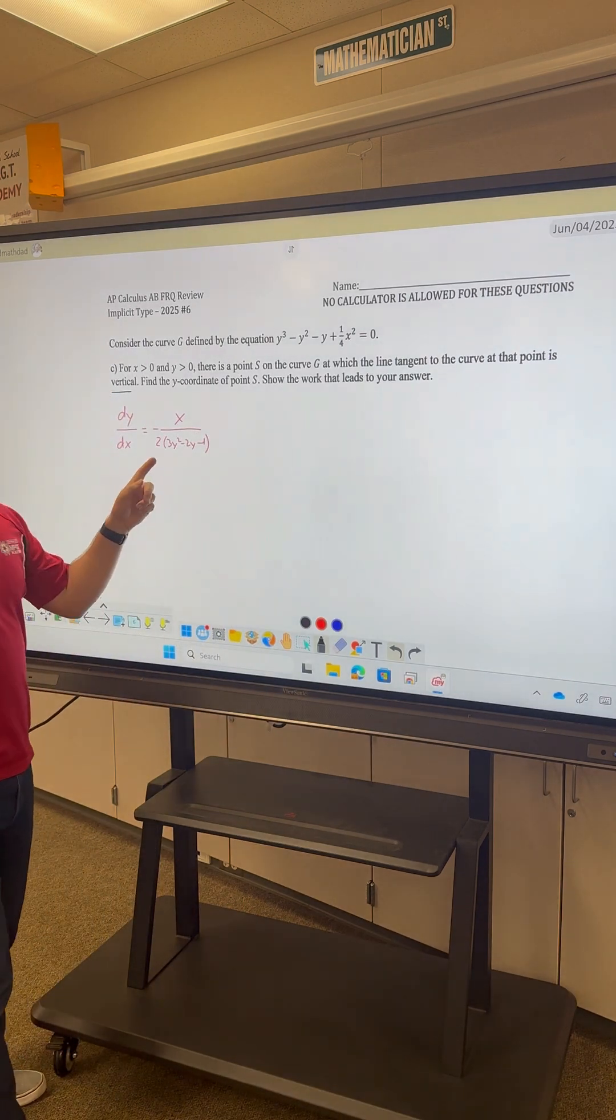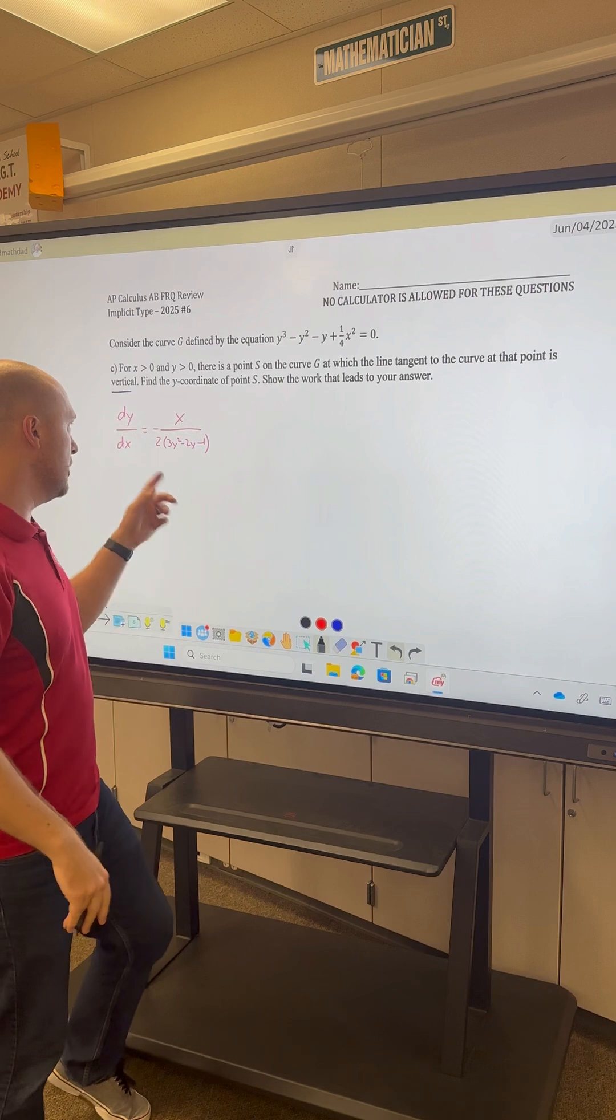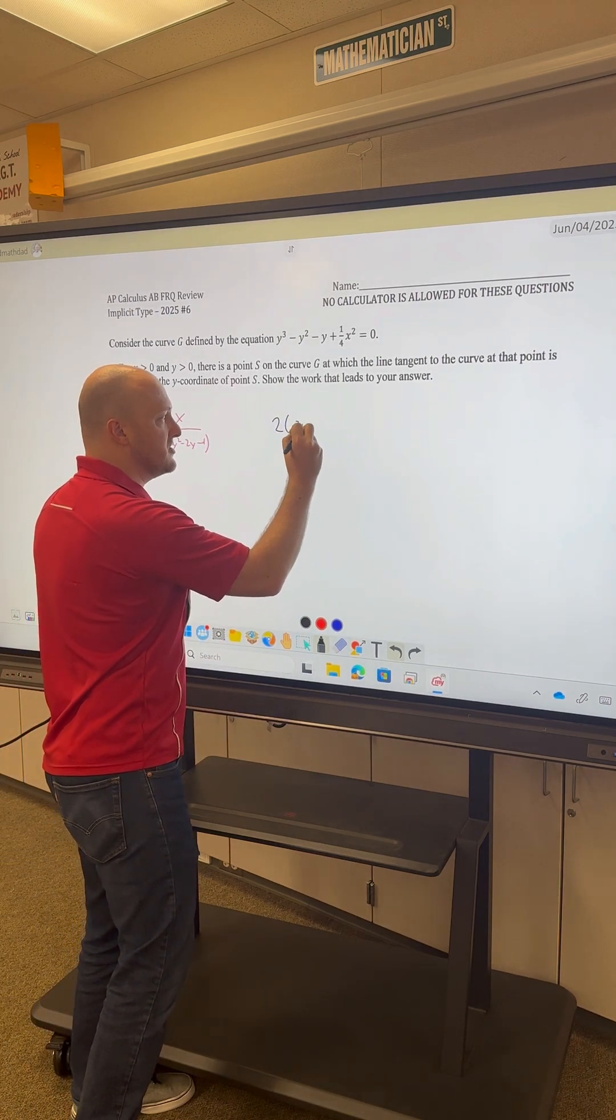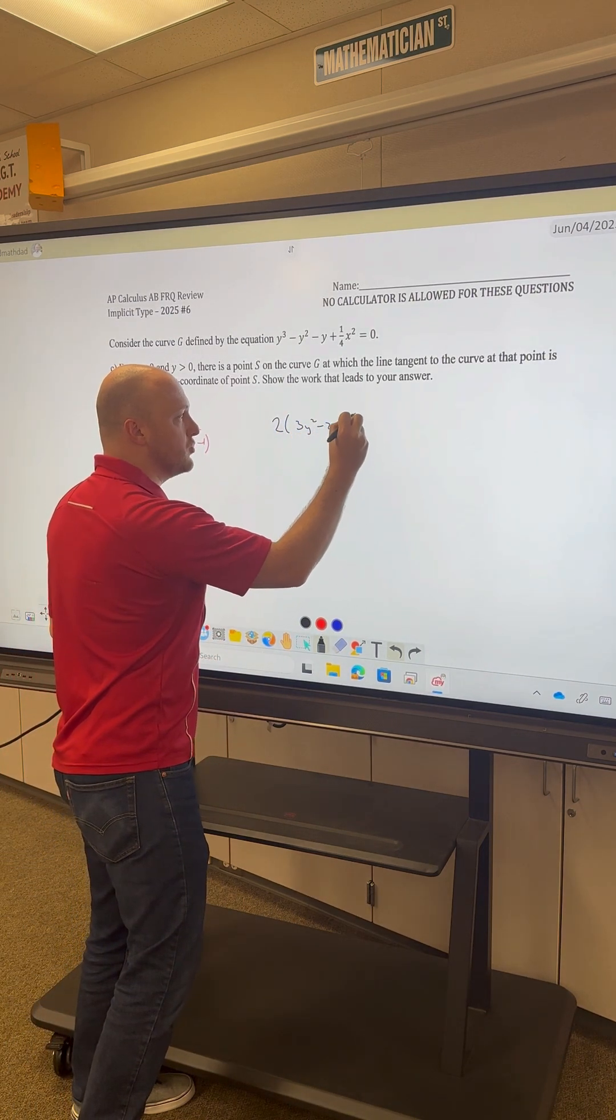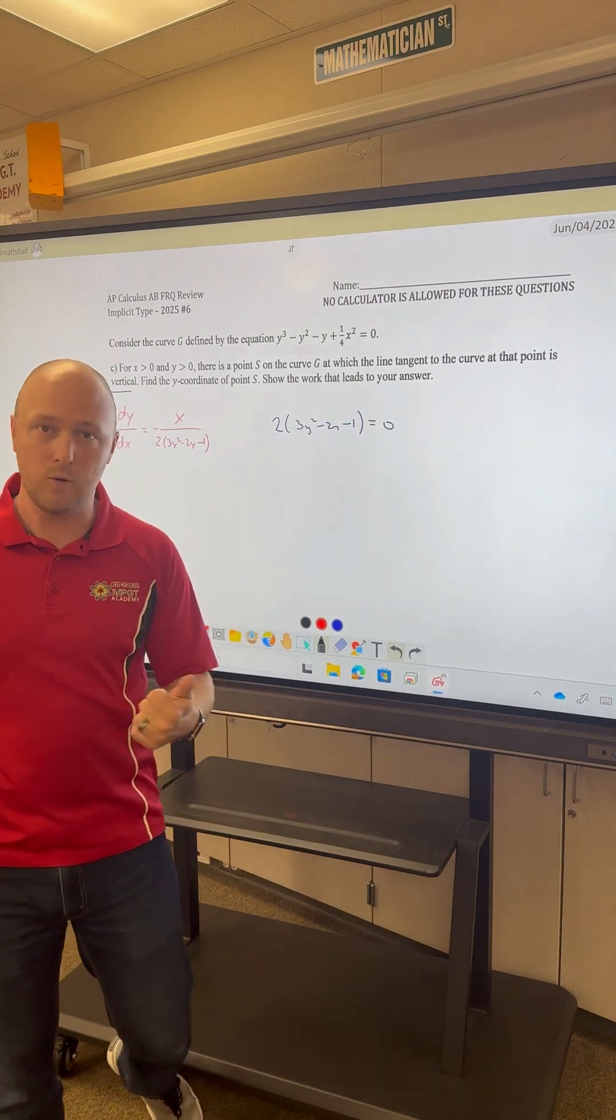We can take the denominator and set this equal to 0 in order to have an undefined slope. So if I make 2 times 3y squared minus 2y minus 1 equal to 0, we can solve and we'll have that y-coordinate.